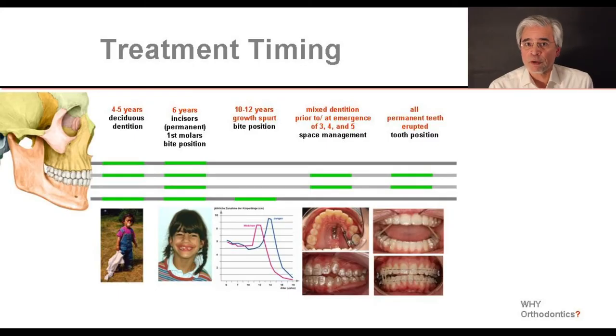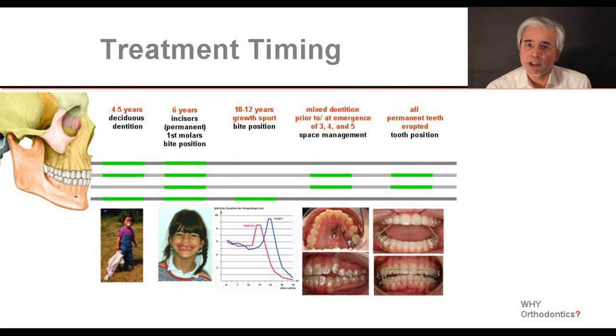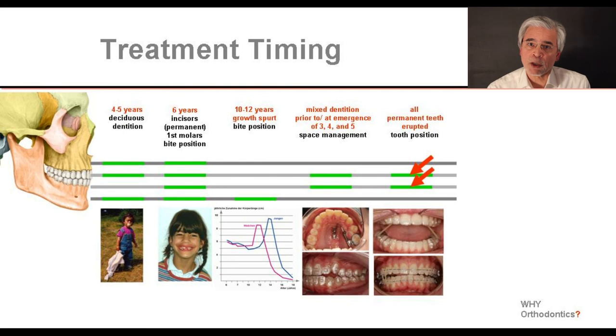When all teeth have erupted — with the exception of the wisdom teeth, which only come after 18 or even never — we see whether they are all in their proper position. We may then correct rotations, crowding, and angulations of teeth for a treatment period of about one year, which is how long fixed braces or aligners have to be worn. Only in really severe cases, for example if an impacted canine has to be retrieved and aligned into the dental arch, can it take significantly longer. This only applies to the two dental compartments; skeletal growth issues should have been corrected in the meantime.